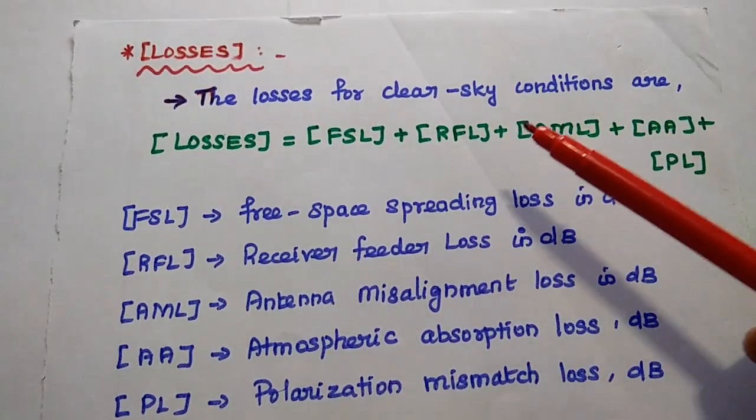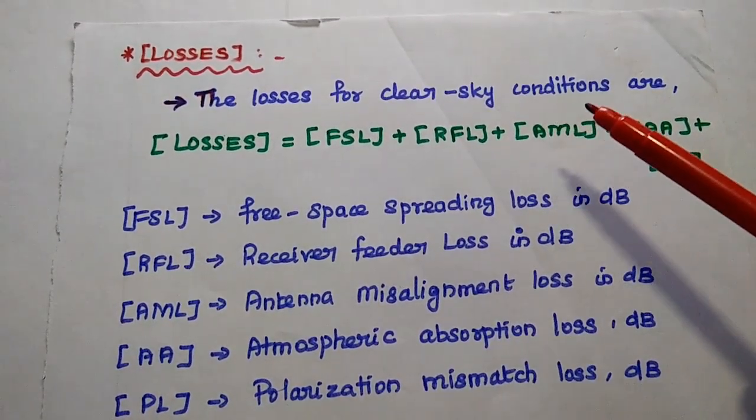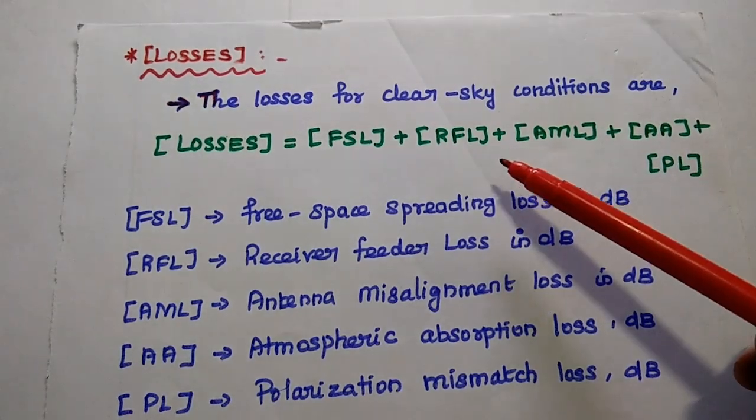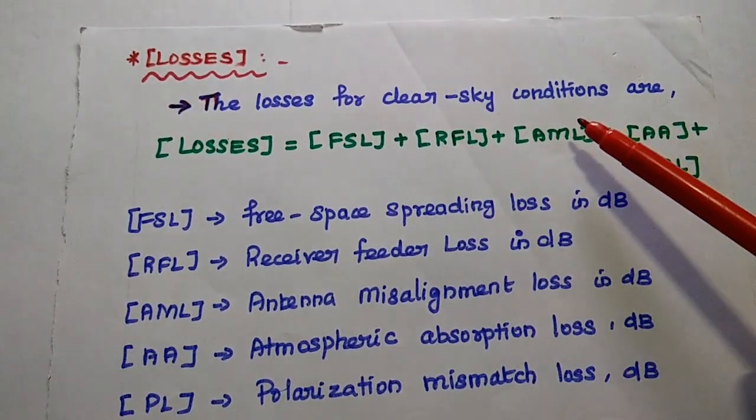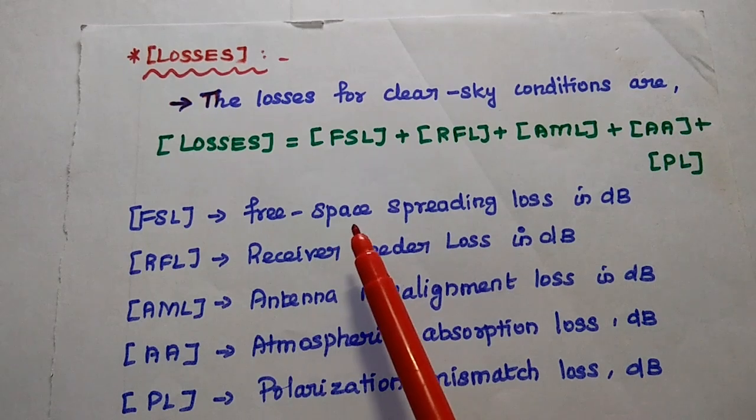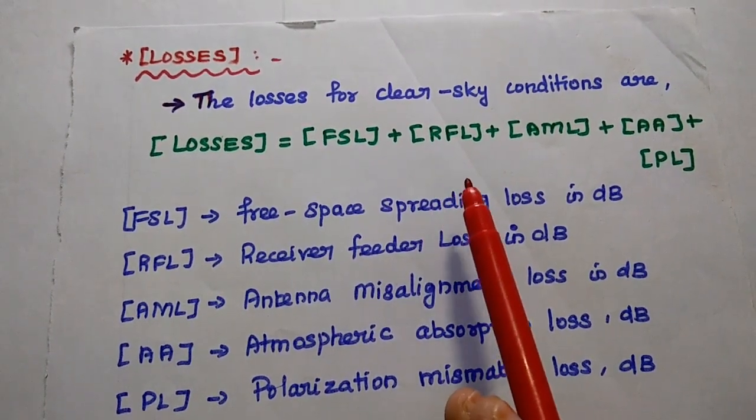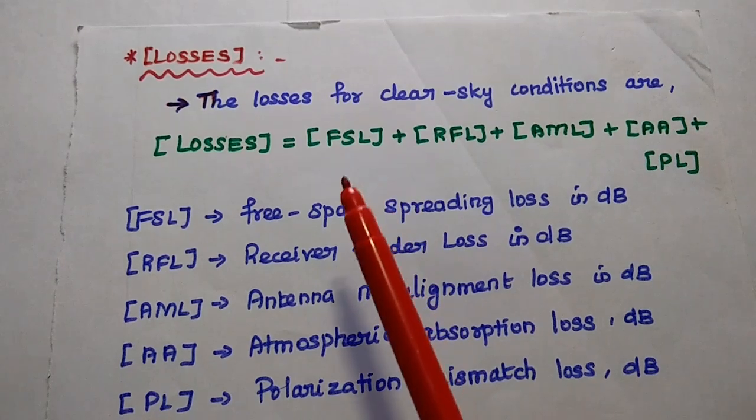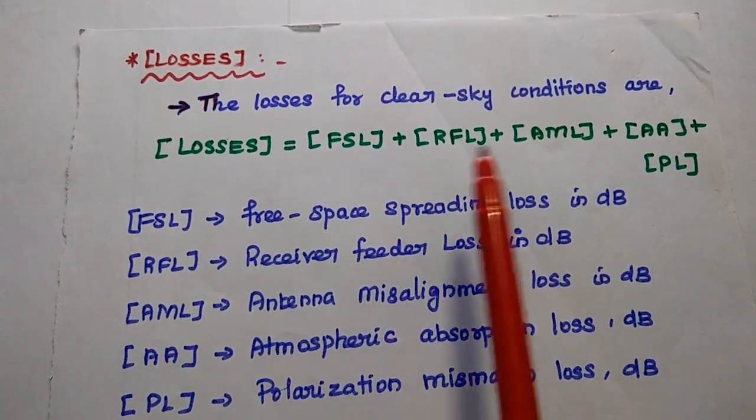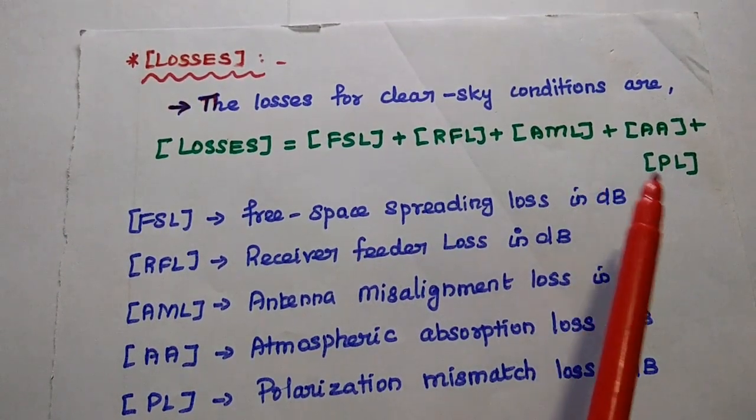Next, the total losses present in the satellite link. Here we can consider the clear sky conditions. So here the total loss is equal to the sum of all types of losses present in the satellite link. Here FSL + RFL + AML + AA + PL.